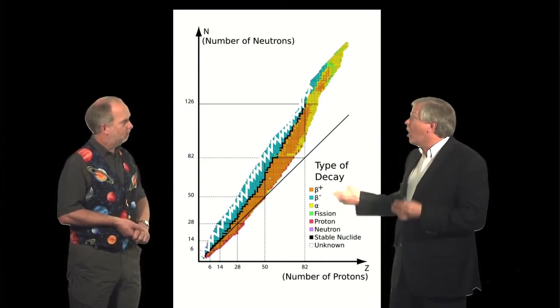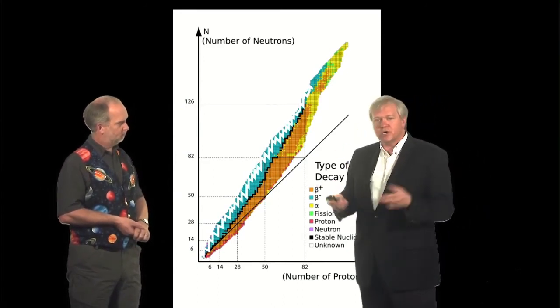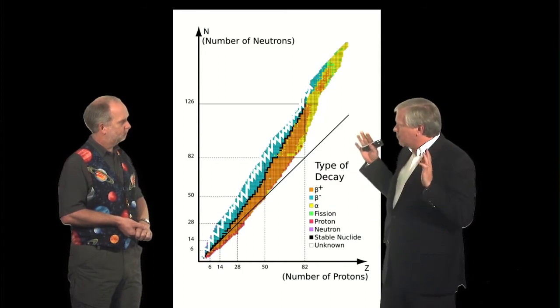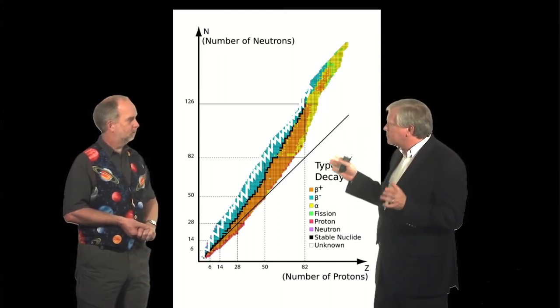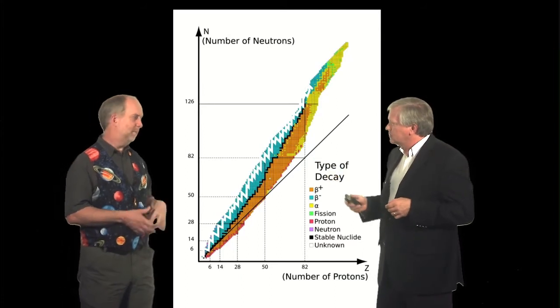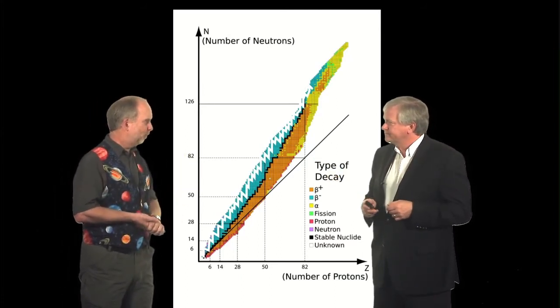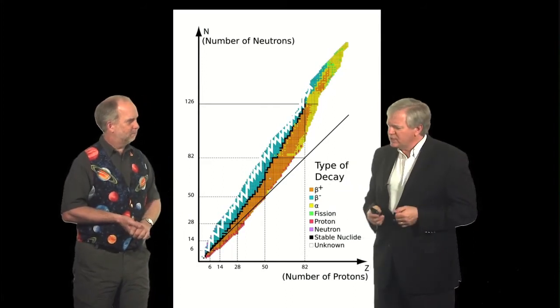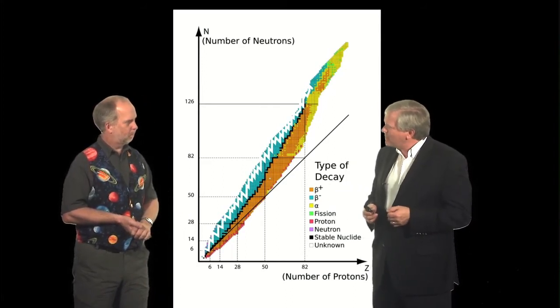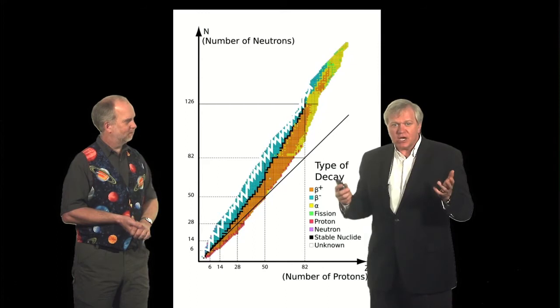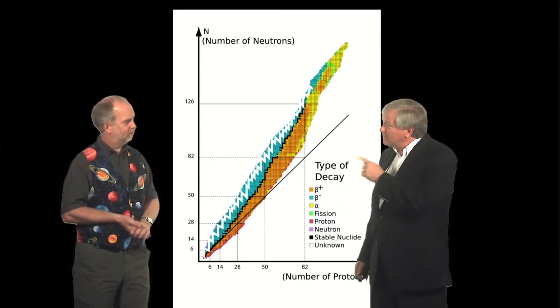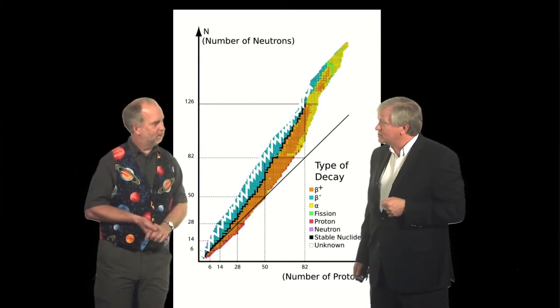So this is what's known as the R process in nucleosynthesis, as we would say. And it's always been a problem because we've never quite been able to figure out where it might occur. I mean the textbooks say it happens in normal supernovae, but yeah, and all the simulations that we do of supernovae don't quite get it to happen. It's the only place we can think of until someone had a brilliant idea a few years ago that maybe it occurs in these mergers of neutron stars.